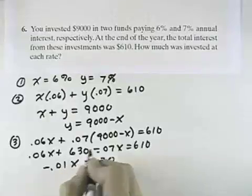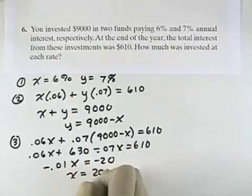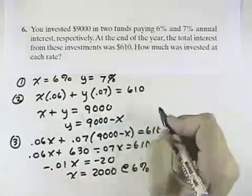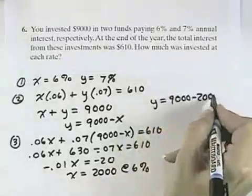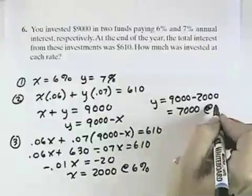To get my X terms combined on the left and my constant terms on the right, dividing both sides, I get X equals 2,000. So that's the amount invested at 6%. Going back to my second equation, I had Y equals 9,000 minus 2,000 to be 7,000. That means 7,000 is invested at 7%.